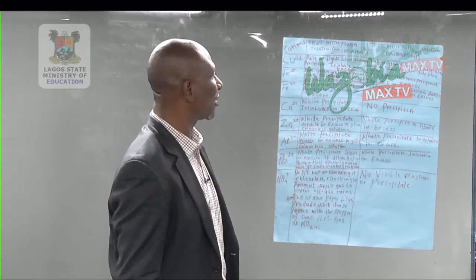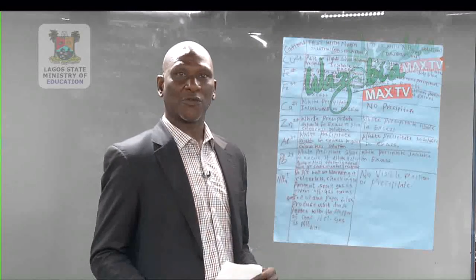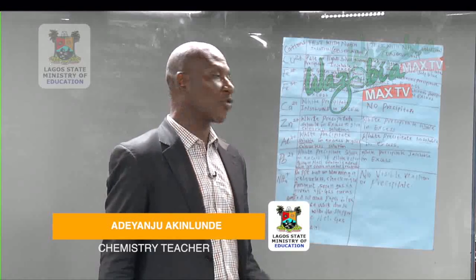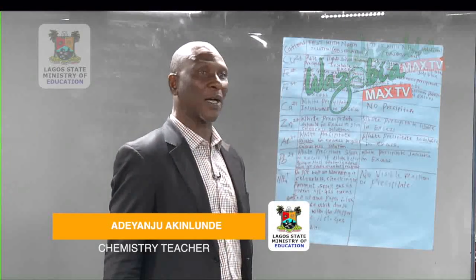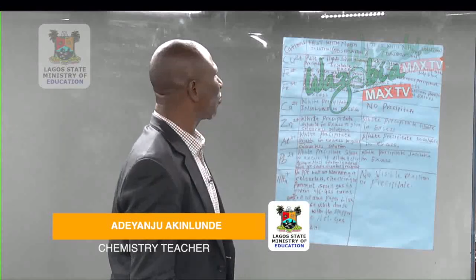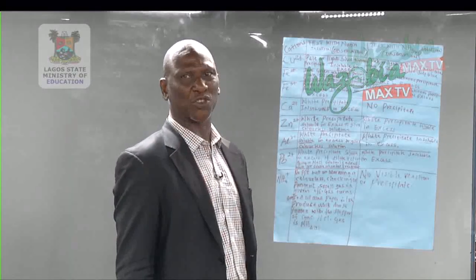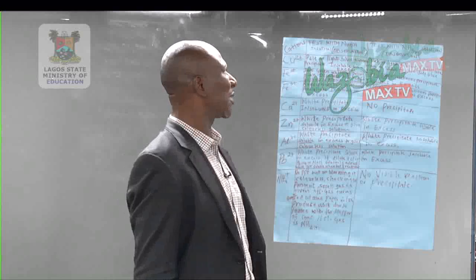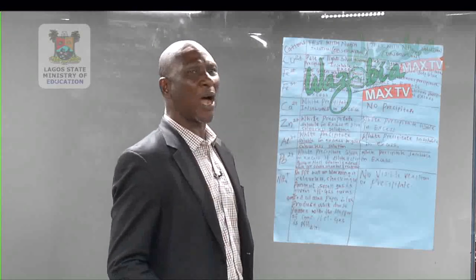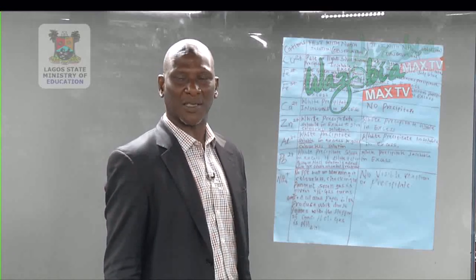Welcome back, students. In our last episode, we looked at the table — we explained what happened at the table, how we lose marks, and how we obtain our marks. On this one now, we are going to look at the qualitative aspects of chemistry — specifically, how do we identify metallic radicals.